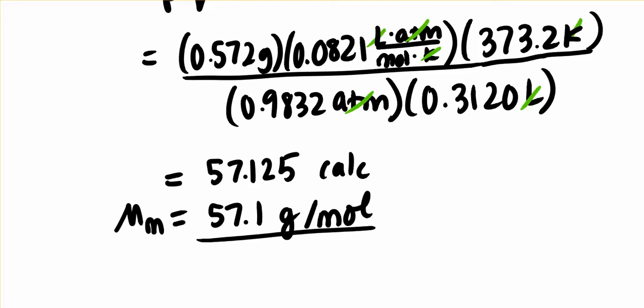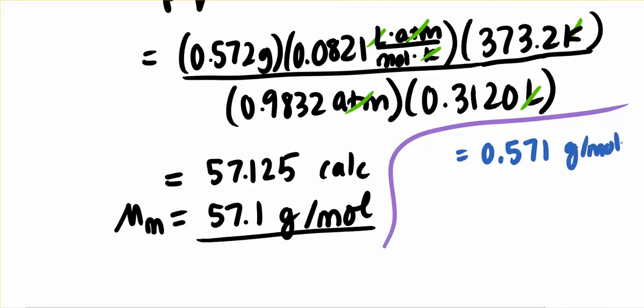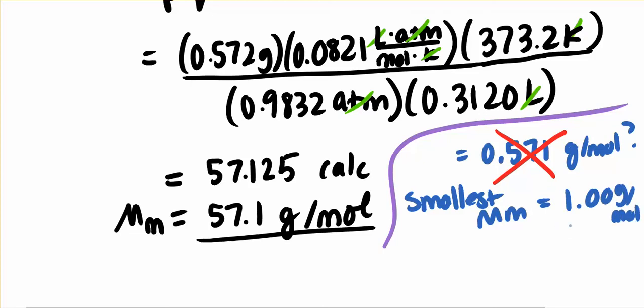What if I had gotten a number, just for example, what if it had said something like 0.5? Would that be possible? That's not possible. Molar masses can't be that small. Why? What's the smallest molar mass that you could get? The smallest molar mass is one for hydrogen. Hydrogen is one mole, one gram per mole. So that's not possible.